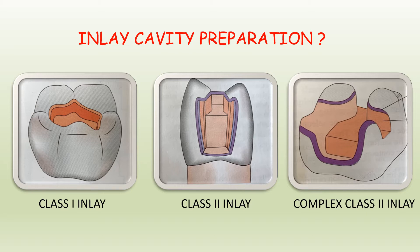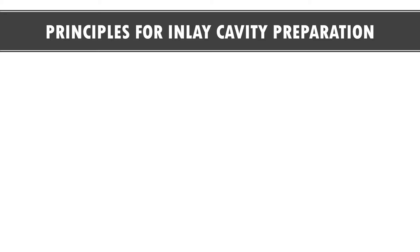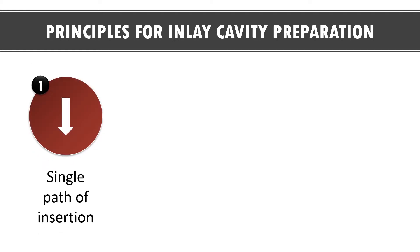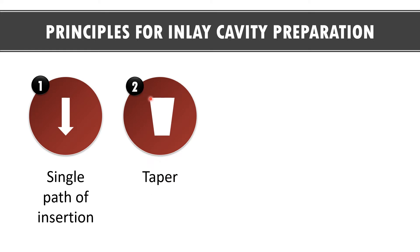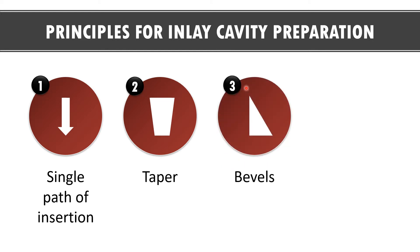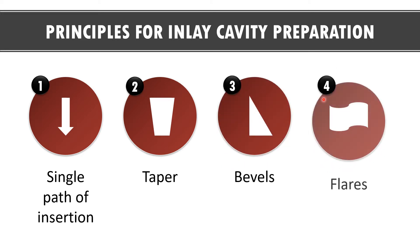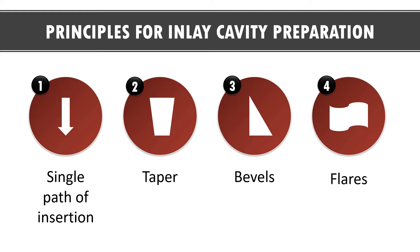What are those principles? There are four principles for inlay cavity preparation. The first one is single path of insertion for the restoration into the cavity. Second is the taper given to the walls of the cavity preparation. Third is the bevels given on the cavosurface margin. Fourth is the flares that we give in the proximal box. Now we will discuss all four in detail.